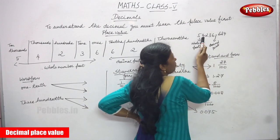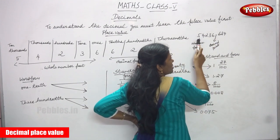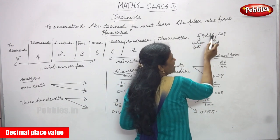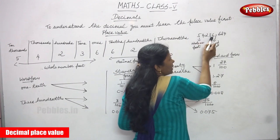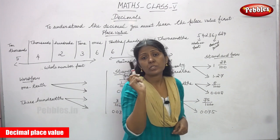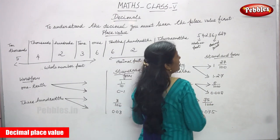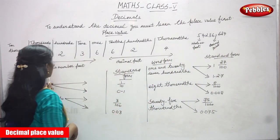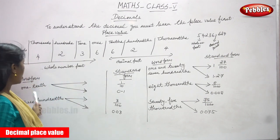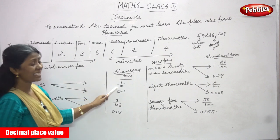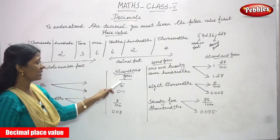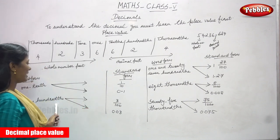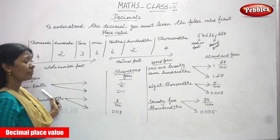Again, we will repeat. 5, 4, 2, 3, 6 is the whole number part. So 54,236.624: the decimal part 624 is six tenths, two hundredths, and four thousandths. This is the place value. After that, this is a word form and this is a standard form. One tenth can be called as one by ten. For the decimal value 0.1, this is an example of word form and standard form.